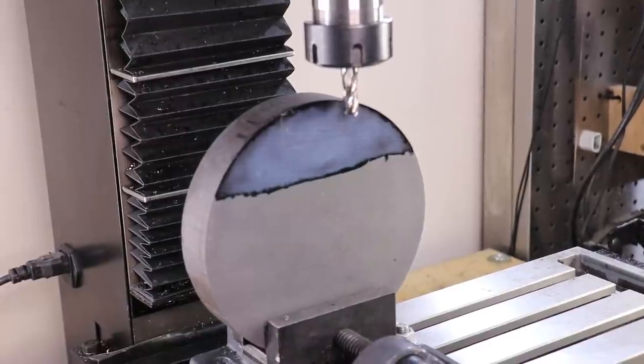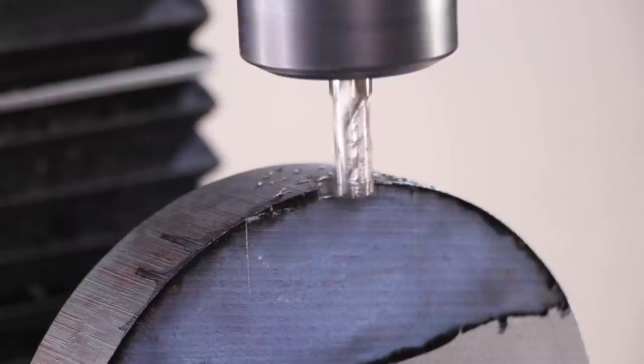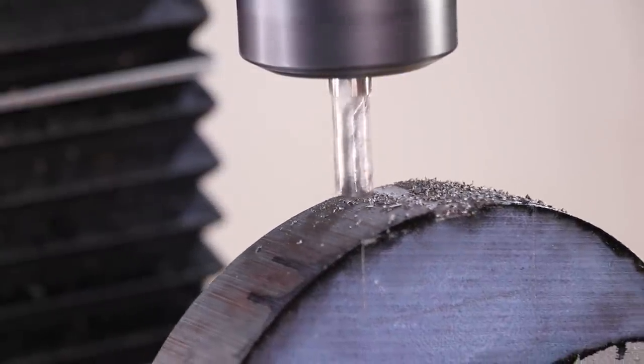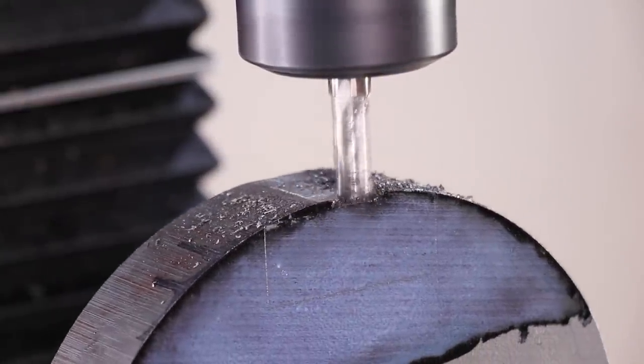I mounted the cast iron vertically in order to machine a slot for the vertical column. And even before I started, I knew I was really pushing it with this small vise in this setup.